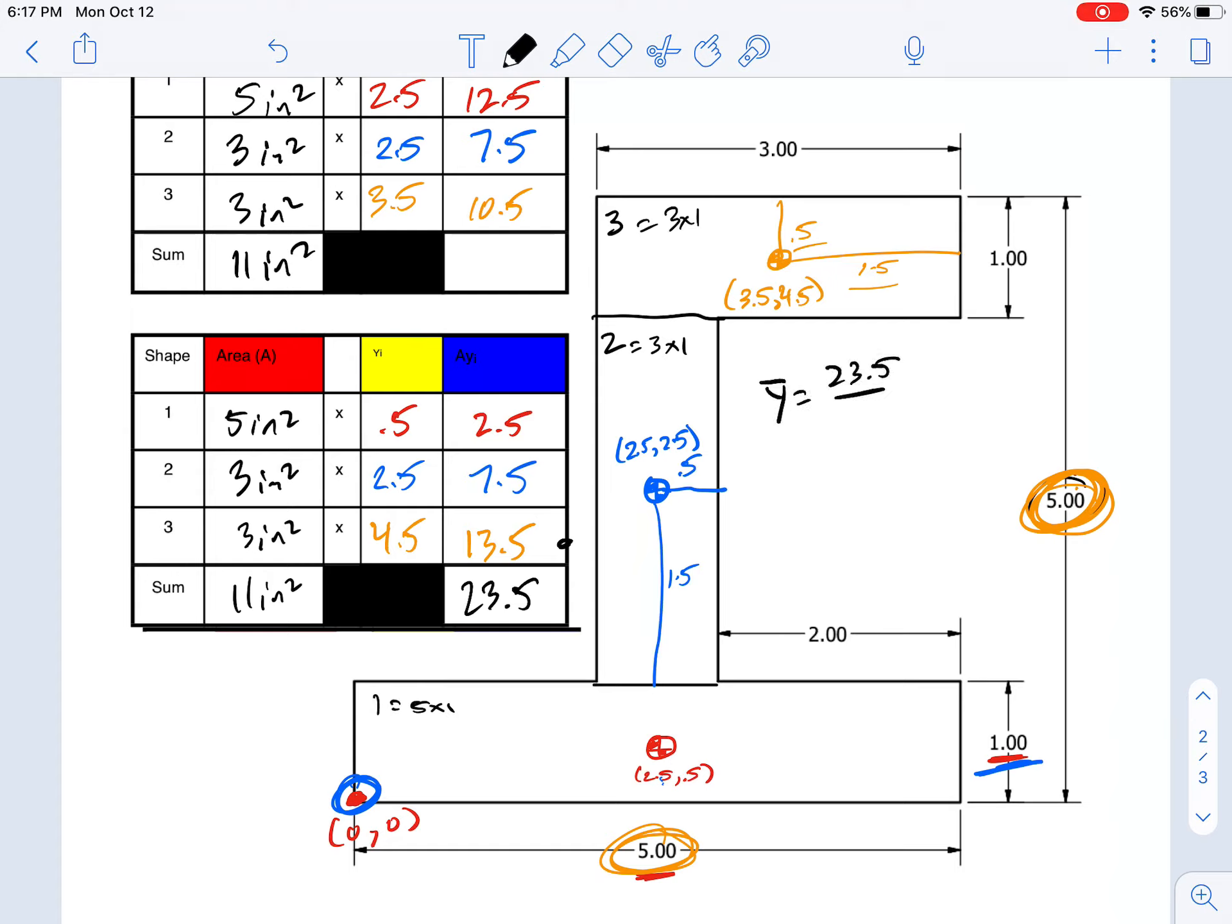The y centroid location will be 23.5 divided by 11. We take the sum of the weighted areas divided by the total area, and for that answer we get 2.14 inches from the origin.